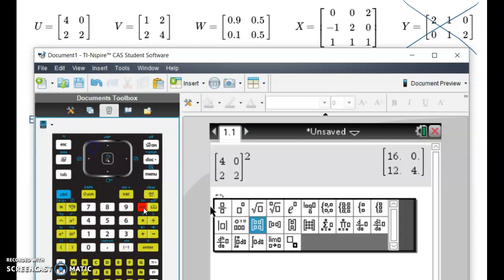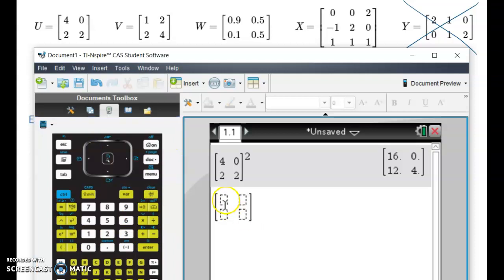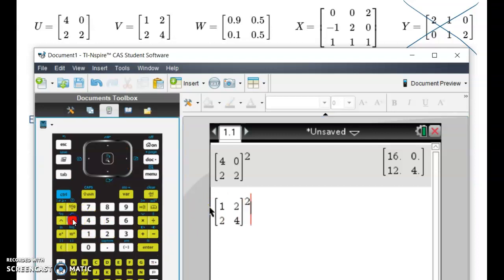I'll show you again how to do it for V. So we hit that. We get our two by two matrix. We enter our elements. So one, tab two, tab two, tab four. We square it with our little squared button over here. And then hit enter. We get our new matrix.